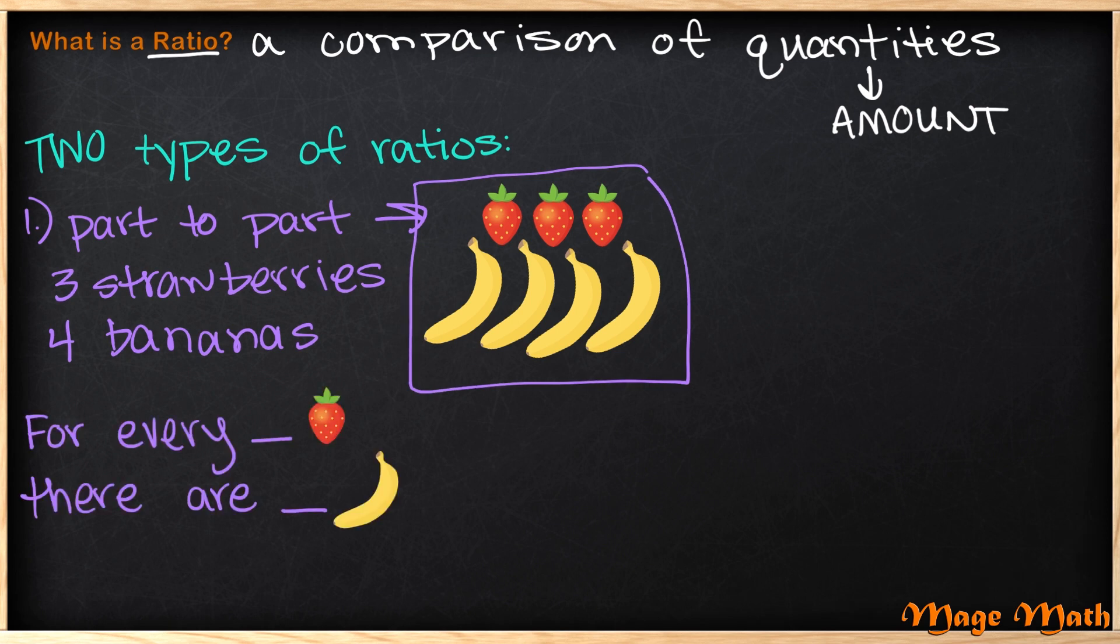So now we need to remember that when we're looking at ratios, we're making a comparison. So how can we write the strawberries and the bananas as a comparison? If you look at the example I have here below, we would say in a math sentence, for every blank strawberry there are blank bananas. How many strawberries do we have?